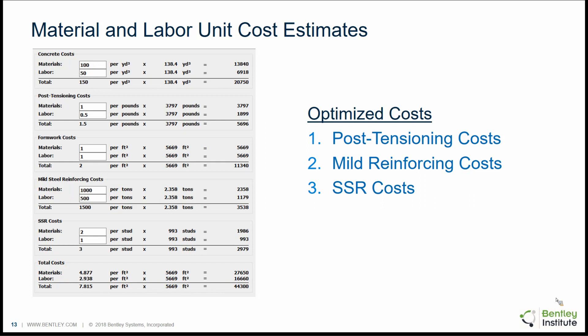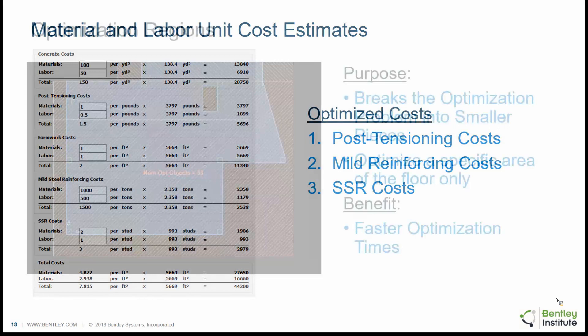The default material and labor costs are used to calculate the optimized cost and find the most economical design. When we refer to optimized costs, we're summing the post-tensioning costs, the mild reinforcing steel cost, and the stud rail costs. In some cases, you may find that the program actually increased post-tensioning when it found the optimized design. When it does that, it's also reducing mild steel reinforcement and stud rail, so the optimized cost is lower. We're not just focusing on post-tensioning — we're looking at post-tensioning and all other reinforcements when optimizing the cost.